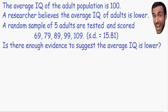Here in this example, it says the average IQ of the adult population is 100. A researcher believes that the average IQ of adults is lower. A random sample of five adults are tested, and the scores are given below. Is there enough evidence to suggest that the average IQ is lower?